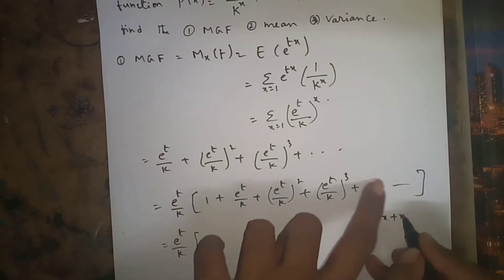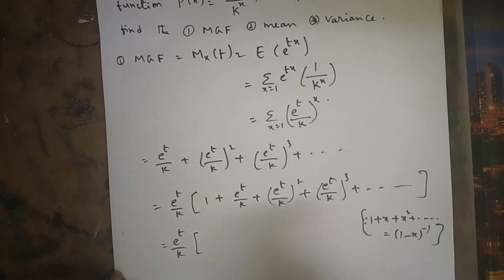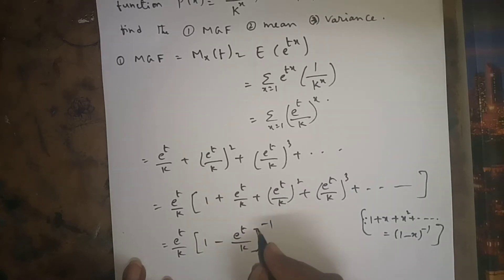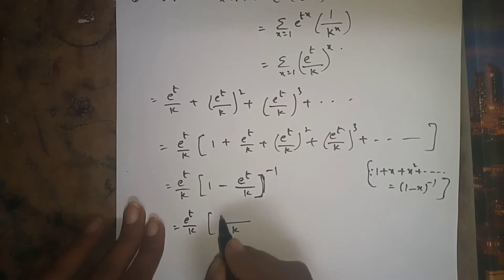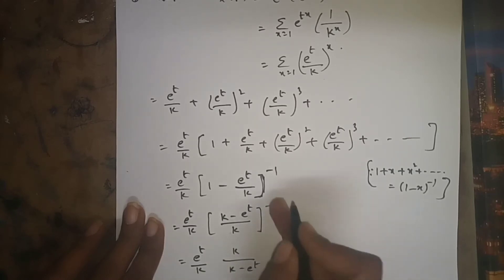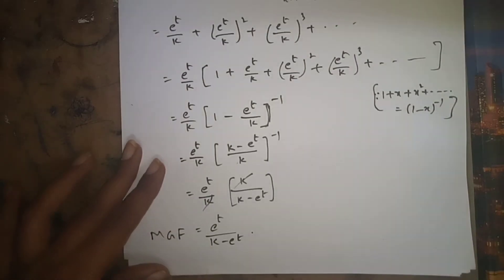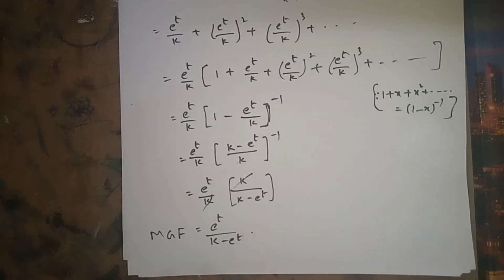This is in the form 1 + x + x^2 + x^3 + ... = (1 - x)^(-1) by the binomial formula. So we get (e^t/k) * (1 - e^t/k)^(-1). Taking k as LCM, this becomes (e^t/k) * (k / (k - e^t)), which simplifies to e^t / (k - e^t). So the MGF M_x(t) = e^t / (k - e^t).